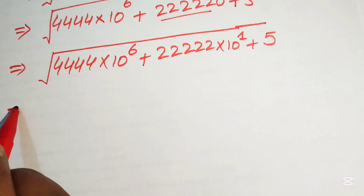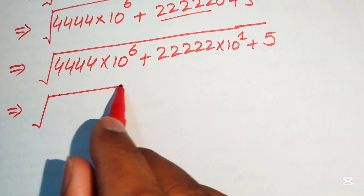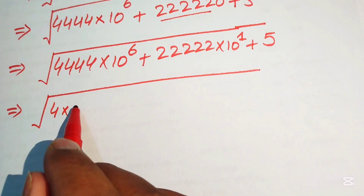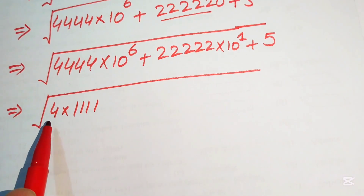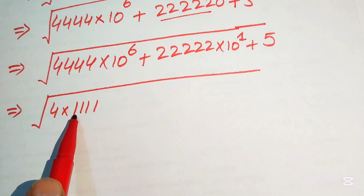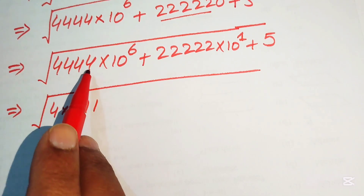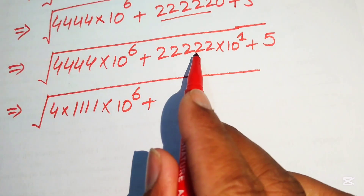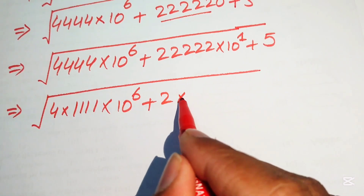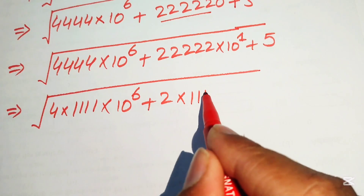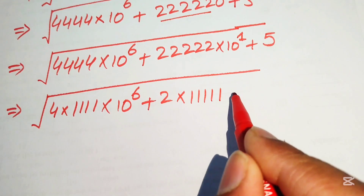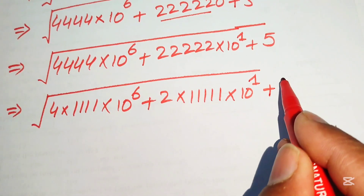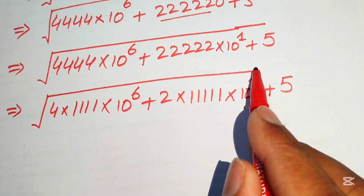We rewrite 4444 as 4 multiplied by 1111. When you multiply 4 by 1111 you get 44444, times 10 raised to power 6. Similarly we break the second number as 2 multiplied by 111111 (1 repeated 5 times), times 10 raised to power 1, plus 5.